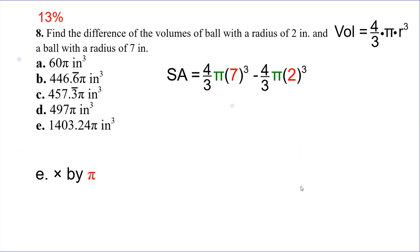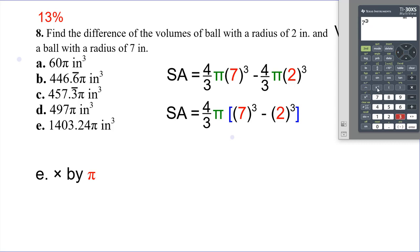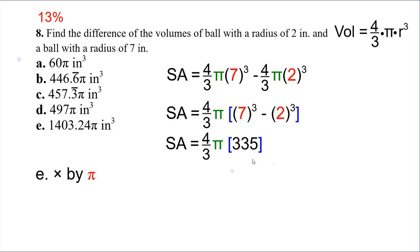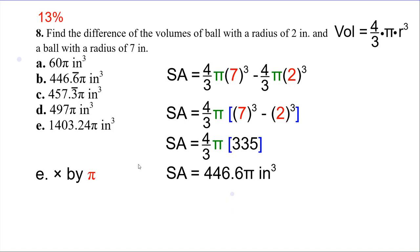Find the difference in volume. You guys nailed this problem, which is a long problem but not that hard. We want to find the difference between the two sphere volumes: seven cubed and two cubed. I notice that these two terms have four-thirds pi in common, so I factored them out. So it's four-thirds pi times the quantity seven cubed minus two cubed in brackets. Then we put that in the calculator: seven to the third power minus two to the third power gives us three hundred and thirty-five.